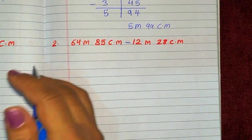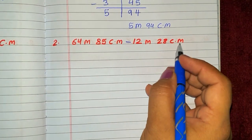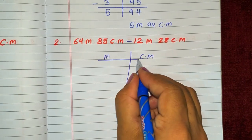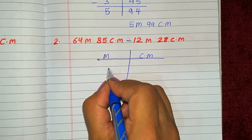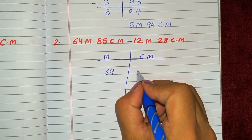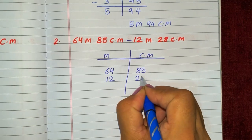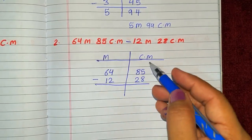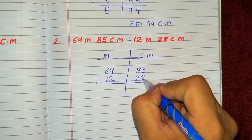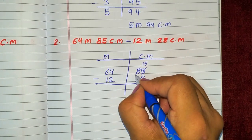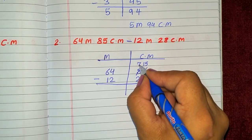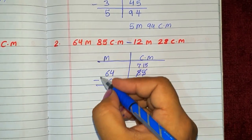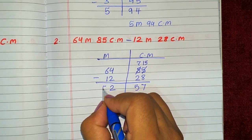Next question: 64 meter 85 centimeter minus 12 meter 28 centimeter. We write meter and centimeter in columns: 64 and 85, then 12 and 28. We leave a little space in the minus column so you can cut if needed. We have 15 here after borrowing; 15 minus 8 is 7, and 7 minus 2 is 5. Then 4 minus 2 is 2, and 6 minus 1 is 5. The answer is 52 meter and 57 centimeter.